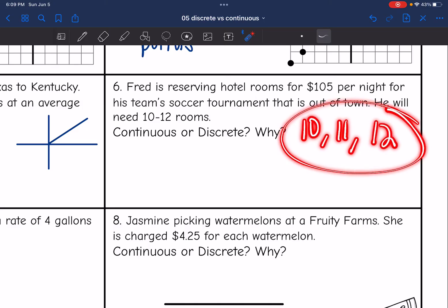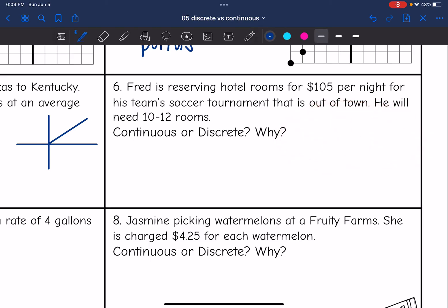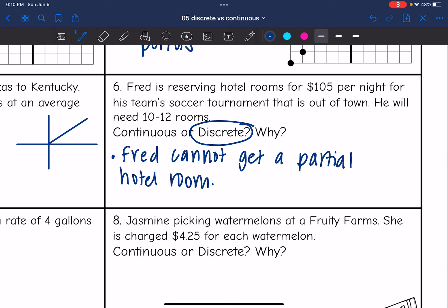It's going to be 10, 11, or 12. They're not going to let you order a partial room. So this is discrete because Fred cannot get a partial hotel room. He can only get 10, 11, or 12.